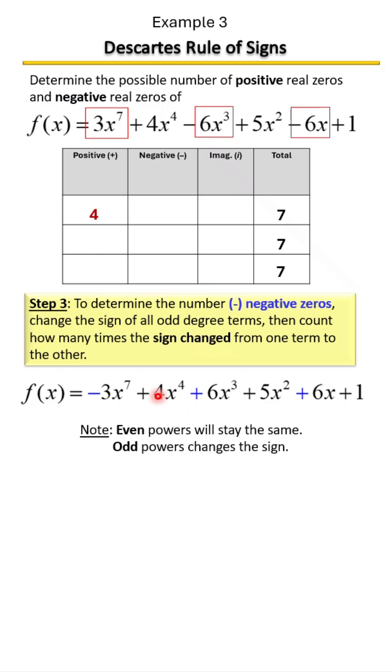So starting with the first, we have a negative and the second term is a positive. So yes, there was a change. Looking at the other terms, they're all positive, so there were no more changes. So there was only one sign change. So we should have a one for our negative zeros.